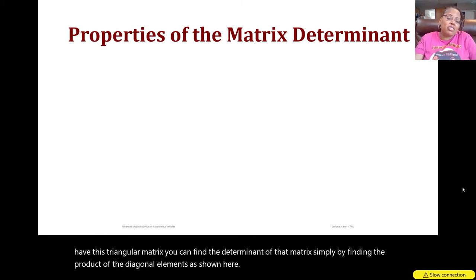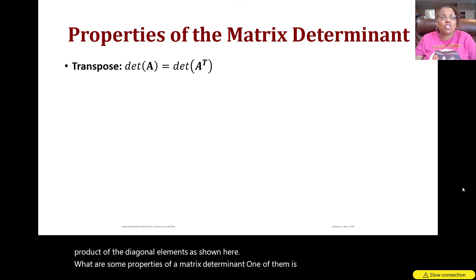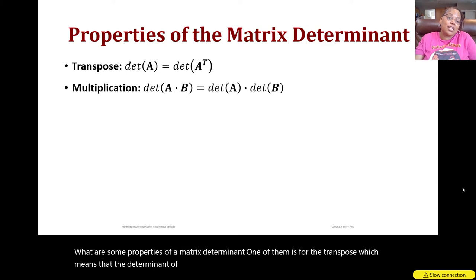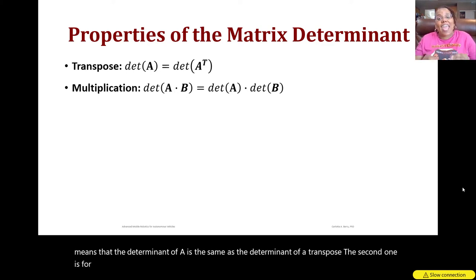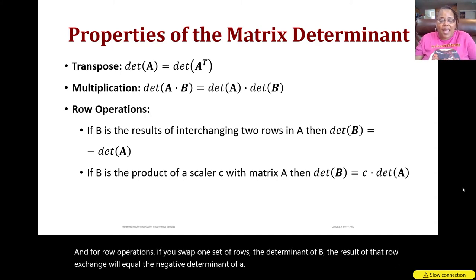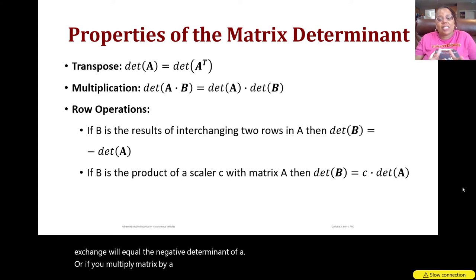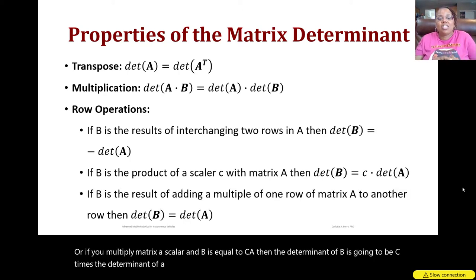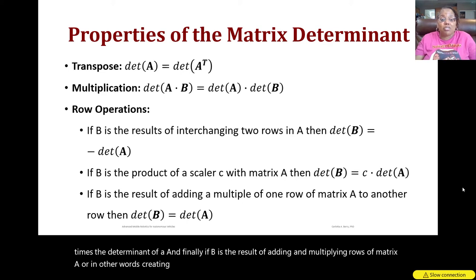Some properties of the matrix determinant: the determinant of A equals the determinant of A transpose; the determinant of A times B equals the determinant of A times the determinant of B; swapping two rows negates the determinant, so det(B) = −det(A); multiplying matrix A by a scalar c gives det(B) = c · det(A); and if B is created by adding multiples of rows of A together, then det(B) equals det(A).